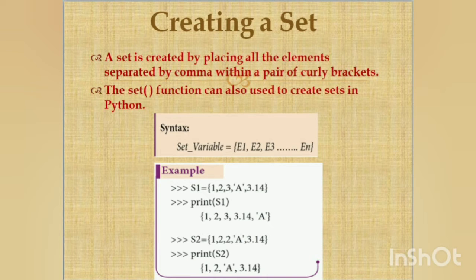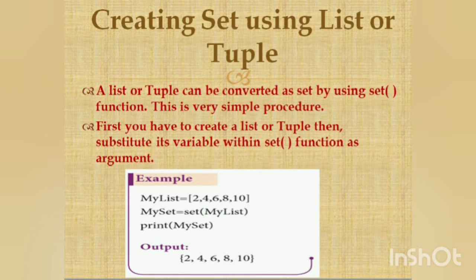After displaying the output you can see that 2 is displayed only once, because sets are mainly used to avoid duplication. So print(s2) gives {1, 2, 'a', 3.14} — the duplicate 2 is printed only once.